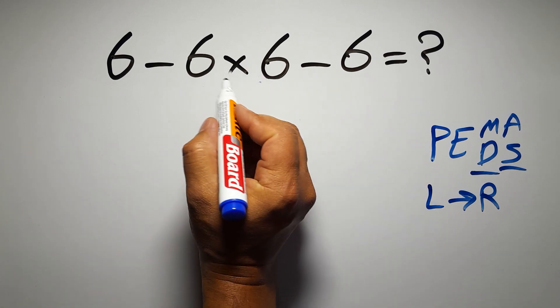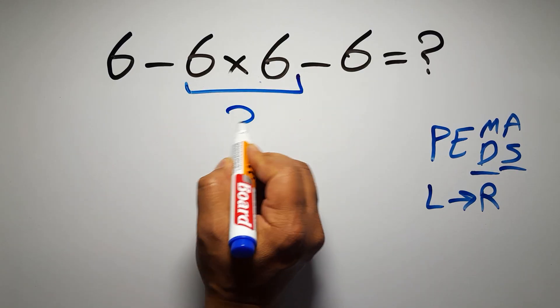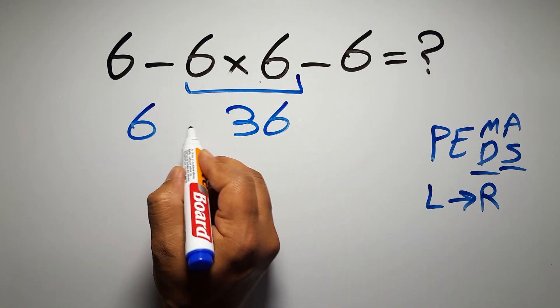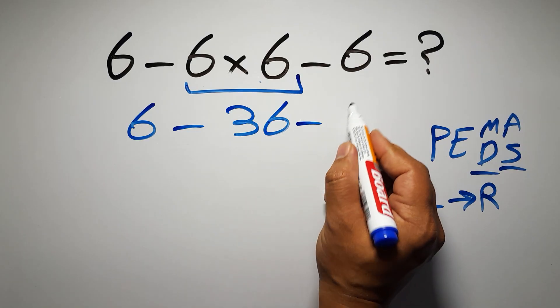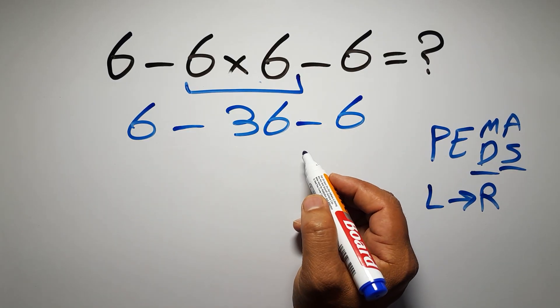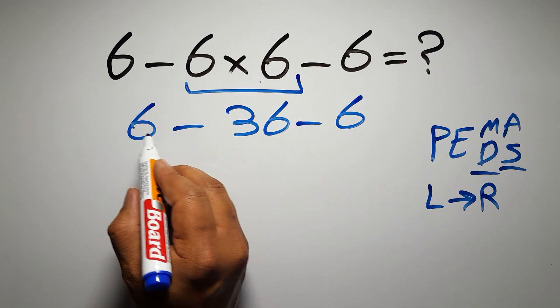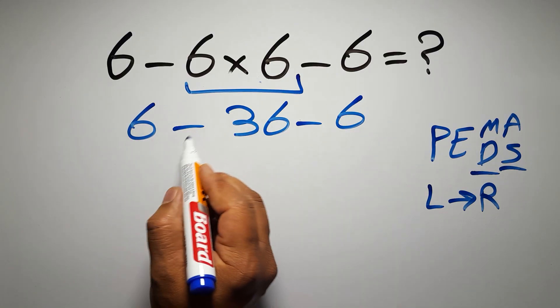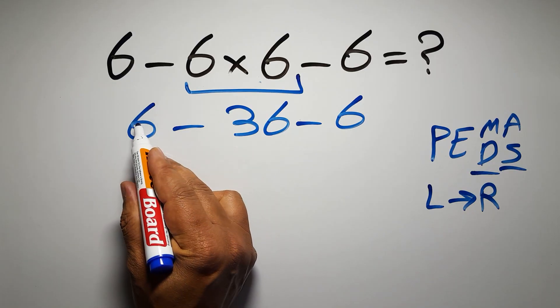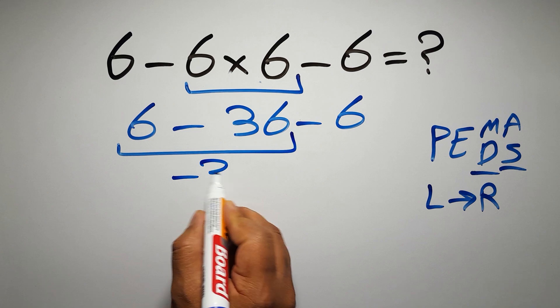So first, this multiplication: 6 times 6 gives us 36, so we have 6 minus 36 minus 6. Now we have two subtractions, and when we have more than one subtraction in an expression, we have to work from left to right. So here first we have to do this subtraction.